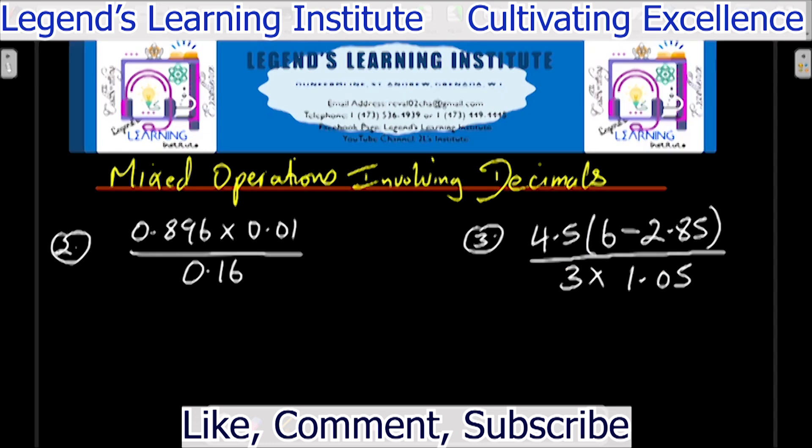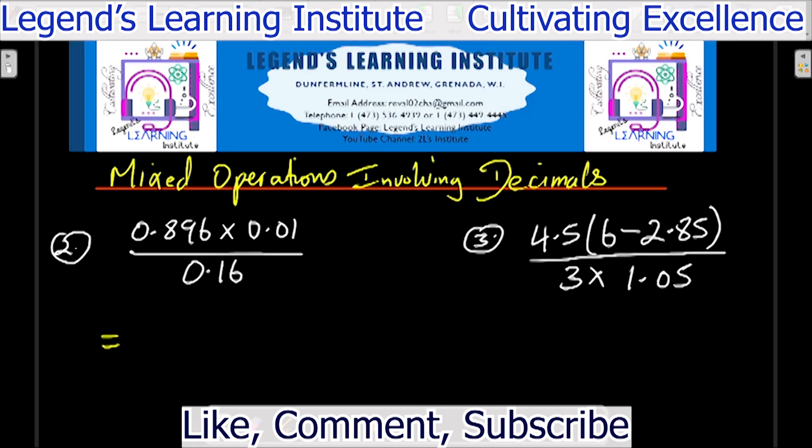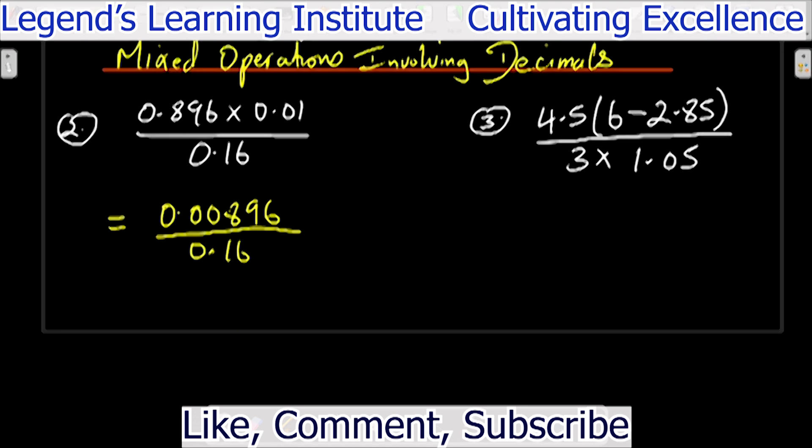The next question we have 0.896 multiplied by 0.01 all over 0.16. So 0.896 multiplied by 0.01 that would give us 0.00896 and then we divide that by 0.16 that would give us 0.056 as our answer.